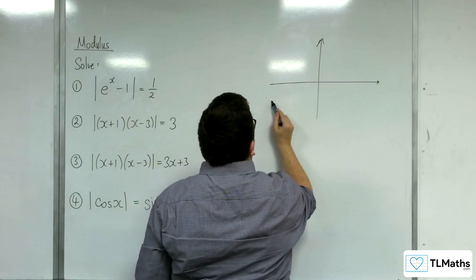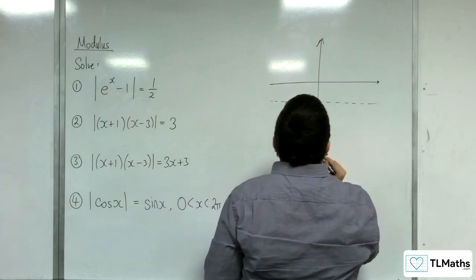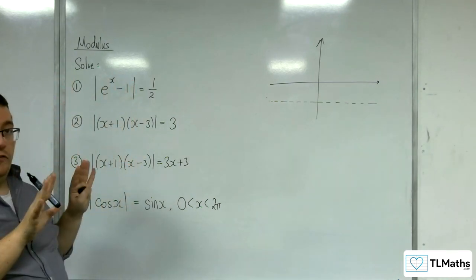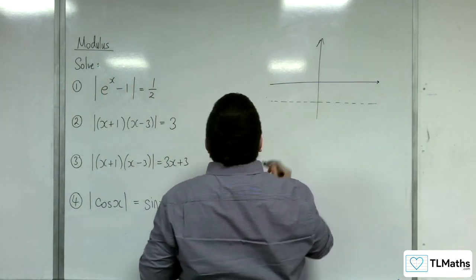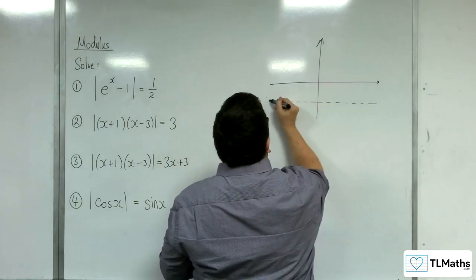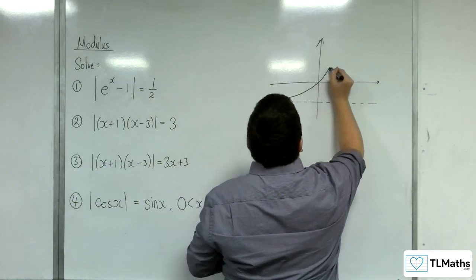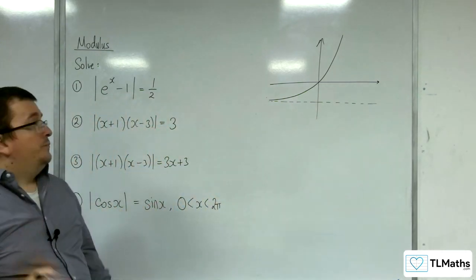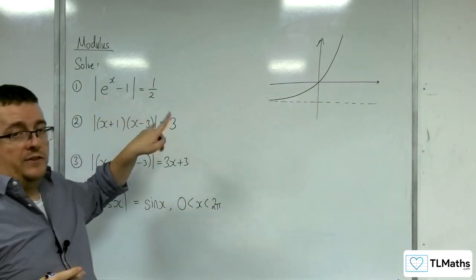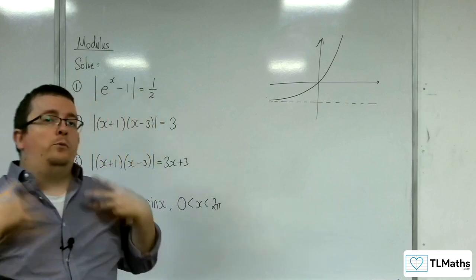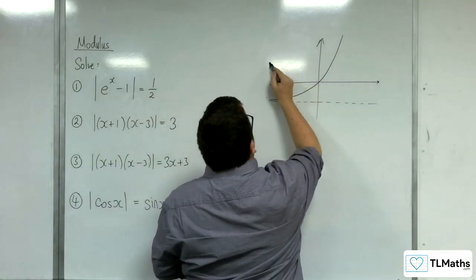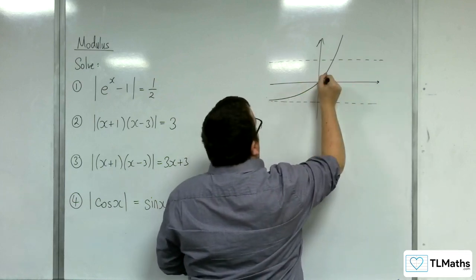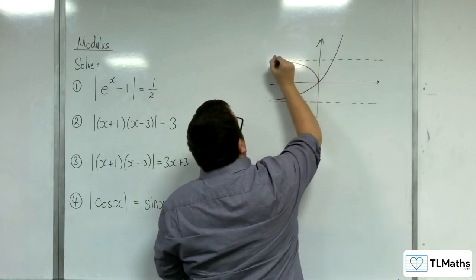That would have a horizontal asymptote at minus 1 — ignore the modulus signs for the moment. It would be going through (0, 0), so it would look something like this. Now, because of the modulus signs, anything that is below the x-axis will get reflected up in the x-axis. So actually, this part of the graph would be reflected up.